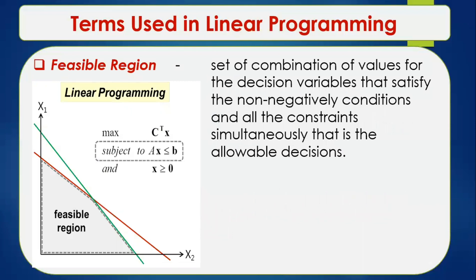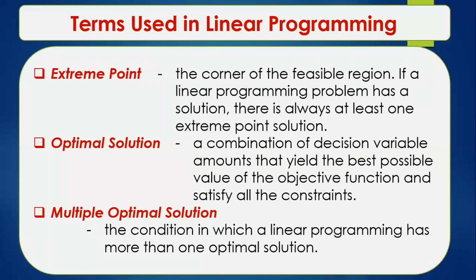The feasible region is a set of combinations of values for the decision variables that satisfy the non-negativity conditions and all constraints simultaneously. As seen in the figure, the feasible region is the area bounded by the intersecting lines. An extreme point is a corner of the feasible region. If a linear programming problem has a solution, there is always at least one extreme point solution.